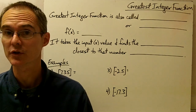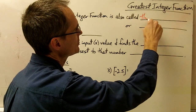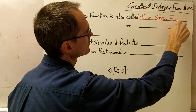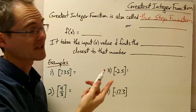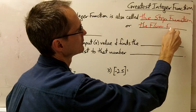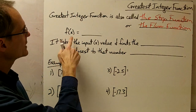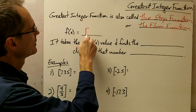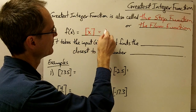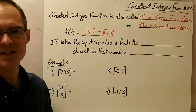This video is on the greatest integer function, which is also sometimes called the step function — we're going to see why in just a minute. It's also occasionally called the floor function, although more often you hear it called greatest integer or step function. It's written with a kind of bracket notation, f equals greatest integer of x. Sometimes you see it written with a double bracket notation, but most of the time we're just going to use this single bracket notation.